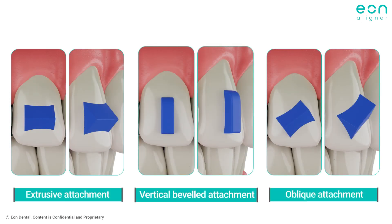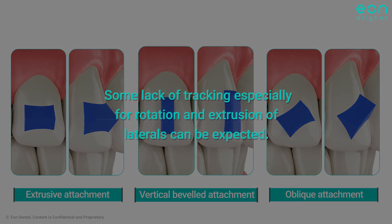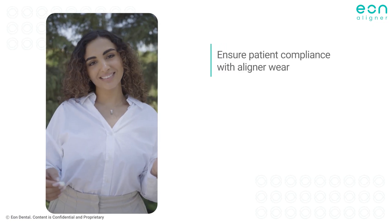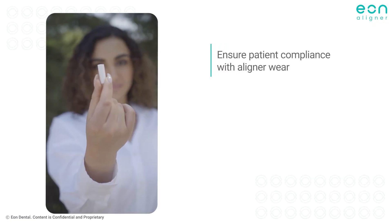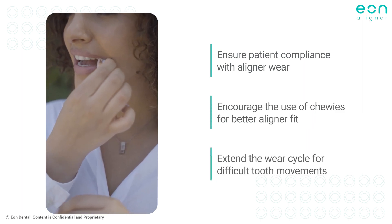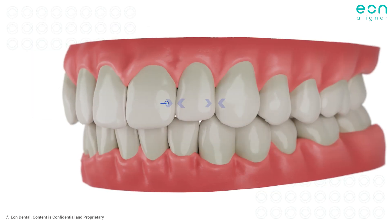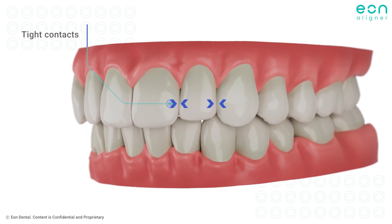Despite all the enhanced techniques and different attachment configurations, some lack of tracking — especially for rotation and extrusion of laterals — can be expected. To overcome this, several tips and tricks can be followed. First, make sure that your patient is compliant with aligner wear, encourage the use of chewies to improve aligner fitting, and extend the wear cycle to accommodate for challenging movements. Second, ensure there is enough space or clearance around the tooth for its movement, as lack of enough space could be a major cause of poor tracking and resistance to movements.